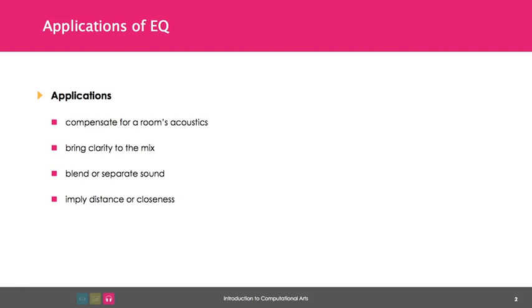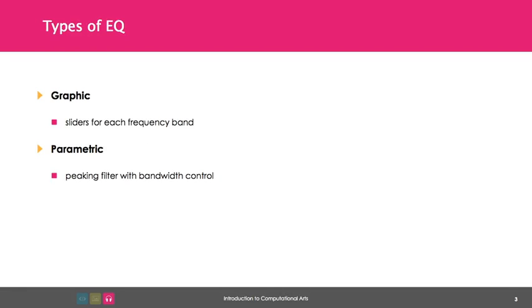EQ can compensate for a room's acoustics, can bring clarity to a mix, help blend or separate sound, and can even imply distance or closeness of the sounding object. There are many types of equalizers.